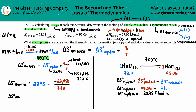Now plugging into the calculator: delta S universe equals (−27,950 ÷ 773) + 22.95. I get approximately −13.2 J/mol·K. Since that's a negative value, the process is not spontaneous at 500°C.